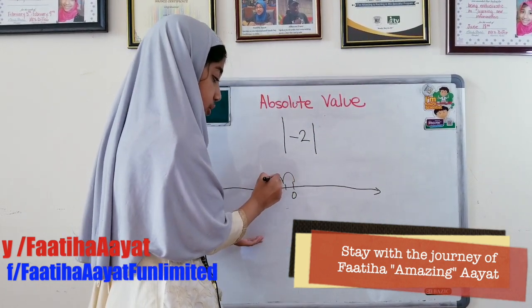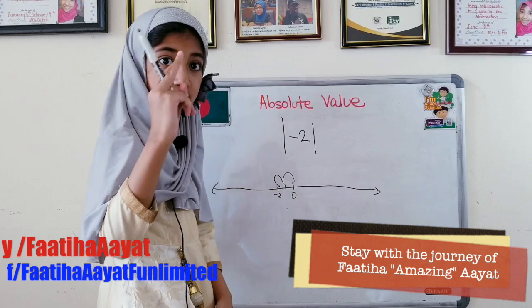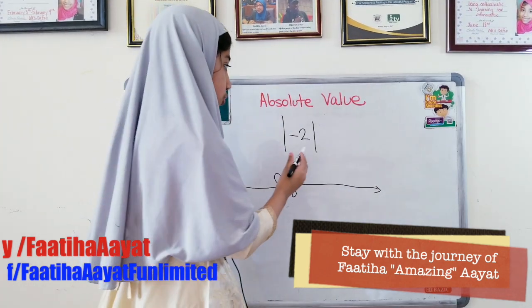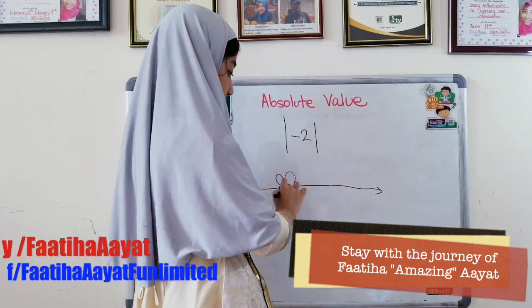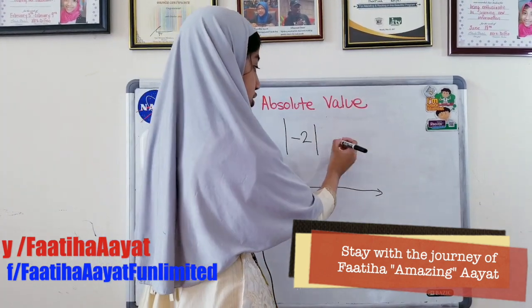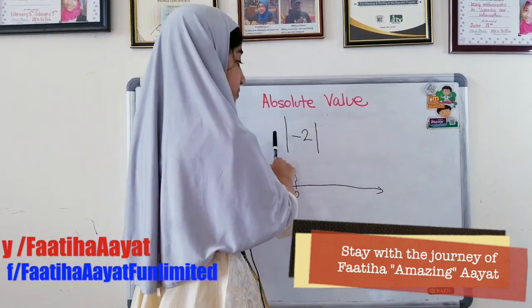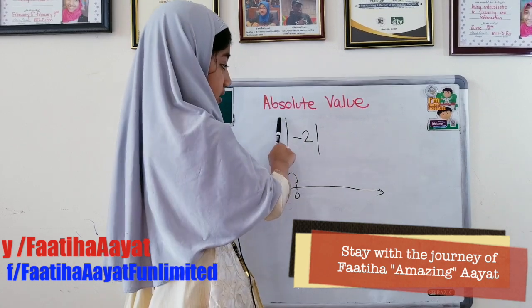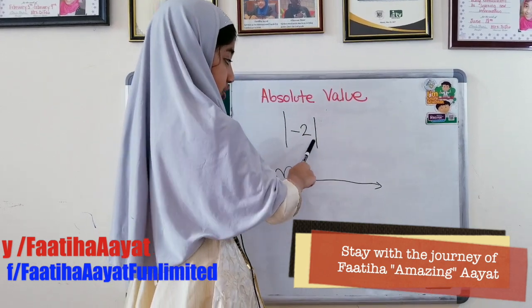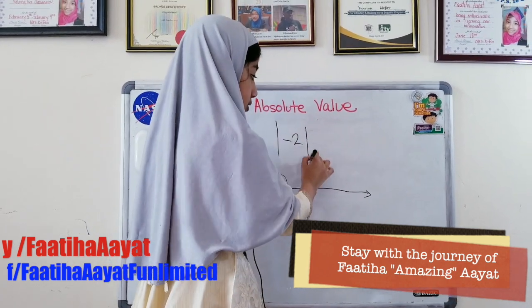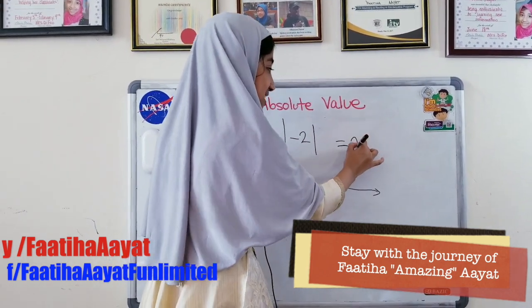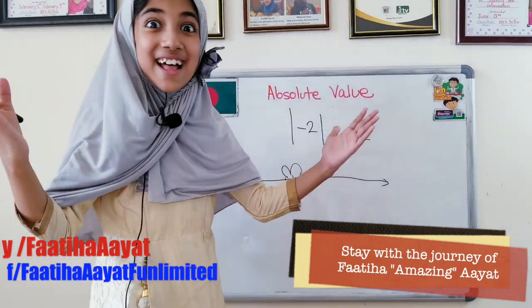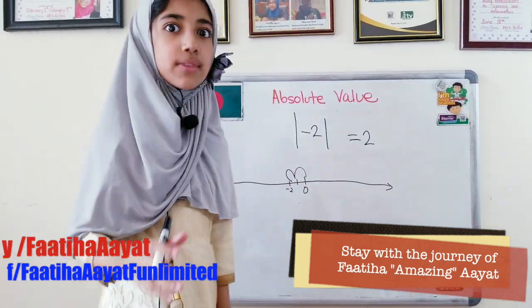I'll see how far away it is from the 0. I see that it's 1 lap, 2 laps — that means 2. Two laps away from 0. So the absolute value of minus 2 is equals to 2. That's so easy.